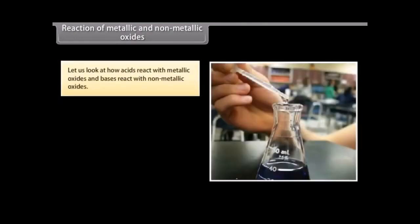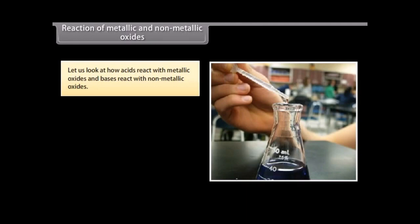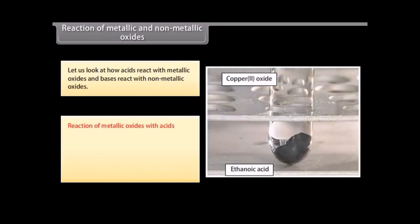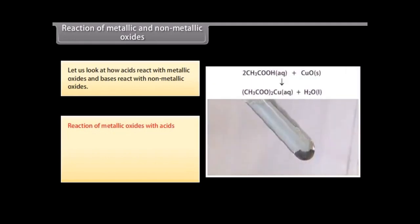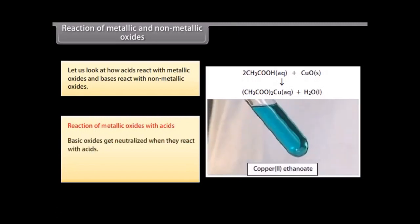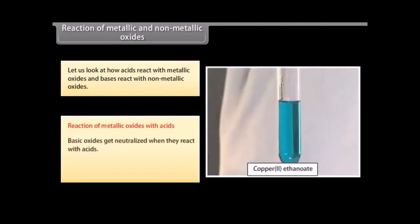Reaction of metallic and non-metallic oxides. Now that you have seen how acids and bases react with metals, hydrogen carbonates, and with each other, let us look at how acids react with metallic oxides and bases react with non-metallic oxides. Reaction of metallic oxides with acids: Oxides that add on hydroxyl ions to their molecules are called basic oxides. These oxides get neutralized when they react with acids. Acids undergo neutralization reaction with basic hydroxides to form salt and water.